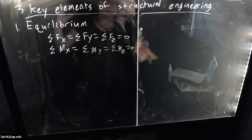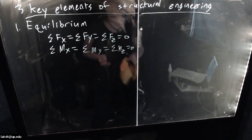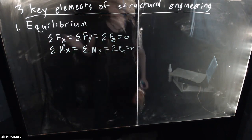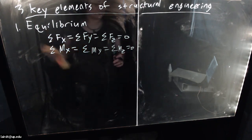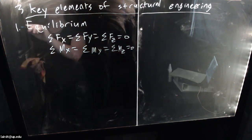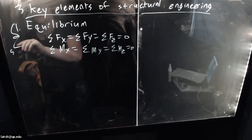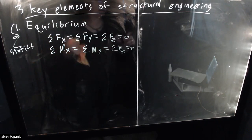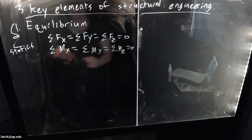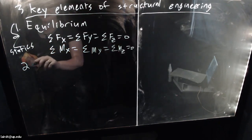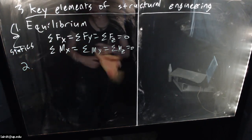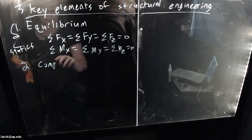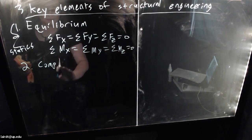If the structure is not in equilibrium, your building is flying through the air and you have a problem. So equilibrium comes straight from statics. That is the first key element of structural engineering and structural analysis and design. The second one is going to be compatibility.